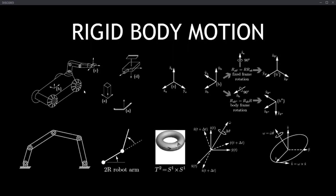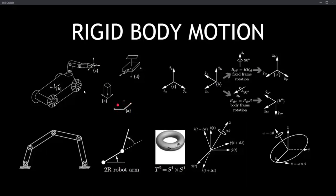Starting with the first topic: rigid body motion. This is essentially the basics of everything. If you are strong in rigid body motion, I can guarantee the rest will be very easy. What actually comes under rigid body motion is, first of all, transformations — knowing where an object is in space with respect to something else, or some reference frame.